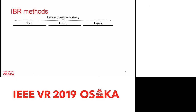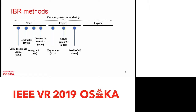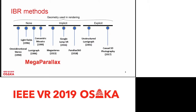IBR methods can be categorized according to the geometry used in rendering, which is essentially ray reconstruction. Methods with no geometry require a very dense set of input images, and rendering is just linearly interpolating rays from a dense database. Implicit methods work on sparser input images, and ray reconstruction uses flow-based guidance. Explicit methods rely on global scene geometry, which is usually hard to obtain for general environments — I mention here the unstructured LumiGraph as a common benchmark. Our method, MegaParallax, can be seen as a combination of casual omnidirectional stereo and image-based rendering.